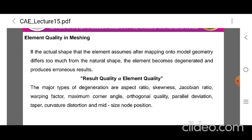The major type of degeneration are the aspect ratio, skewness, Jacobian ratio, warping factor, maximum corner angle, orthogonal quality, etc. Generally, large angles between the edges are more degenerating than the small angles.